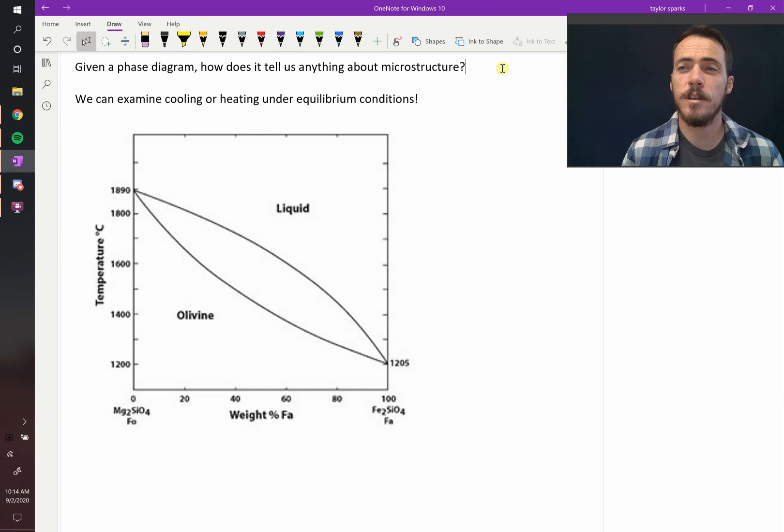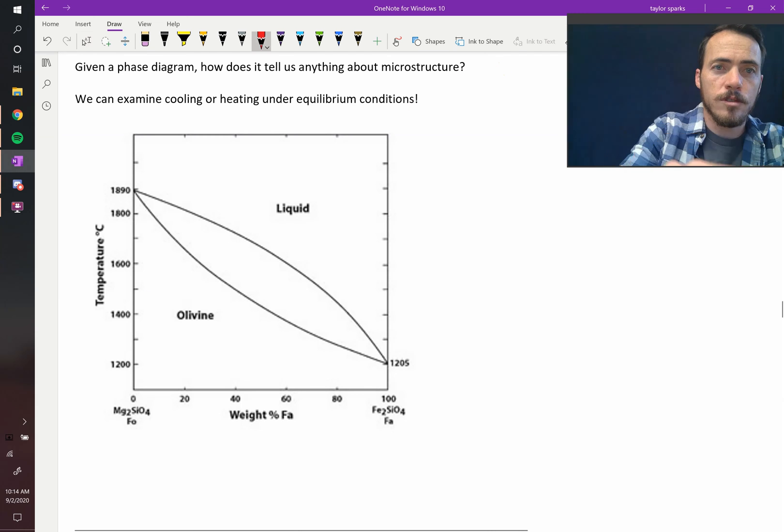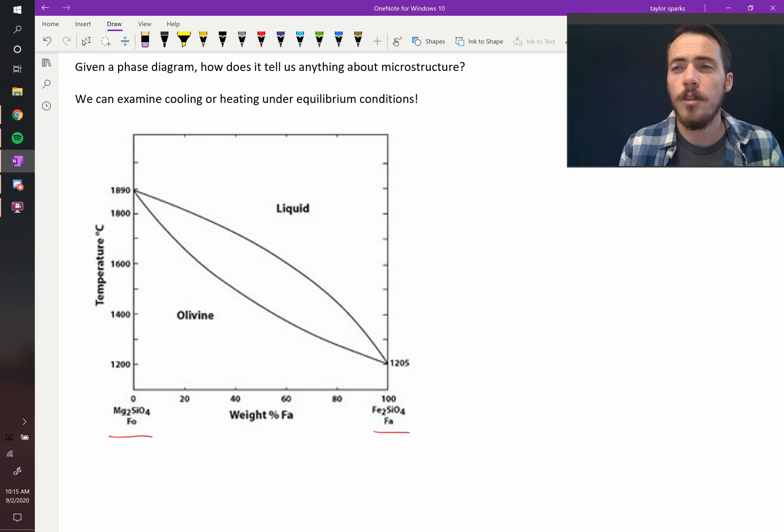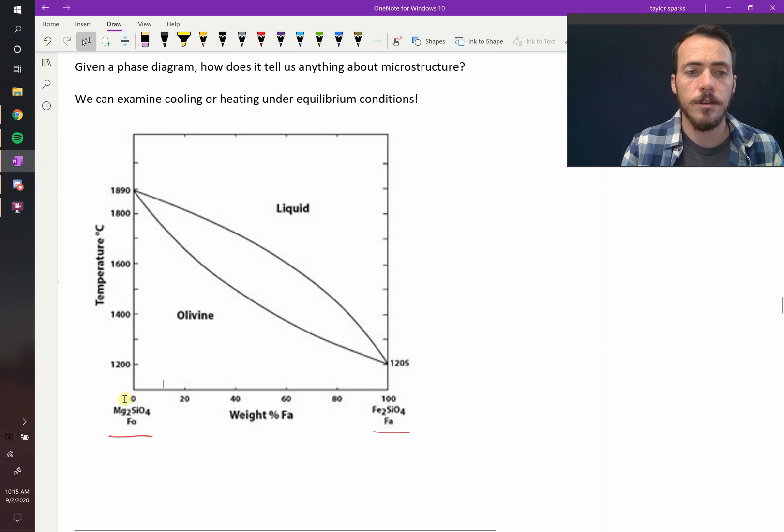The lever rule tells us the amount of the different phases present in a two-phase region. So consider this binary isomorphous phase diagram for two different ceramics. You've got Forsterite, Mg2SiO4, and Fayalite, Fe2SiO4. They're both olivine crystal structure, they just have a different cation, Mg2+ versus Fe2+. So they have complete solid solubility all the way across.